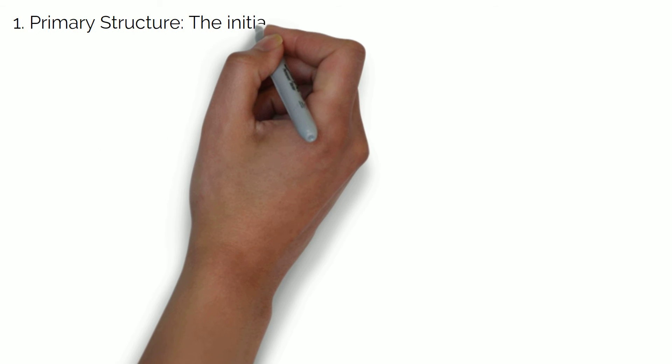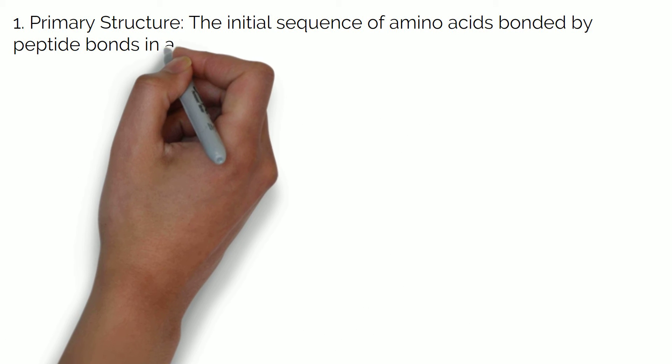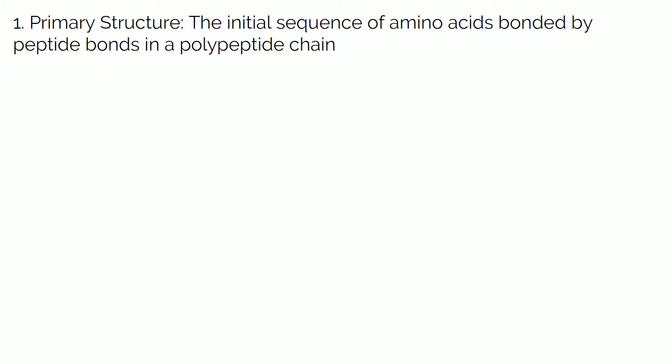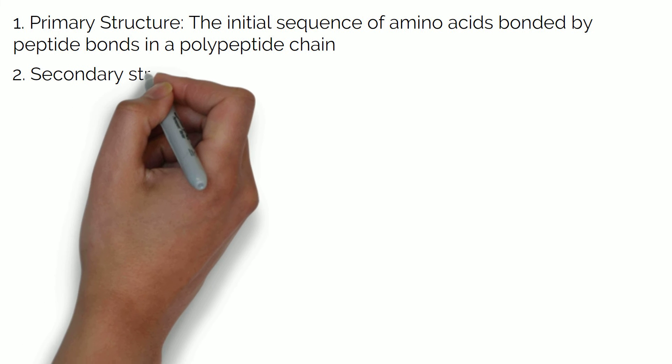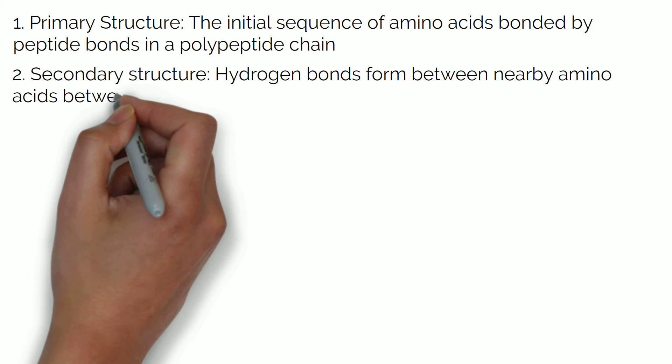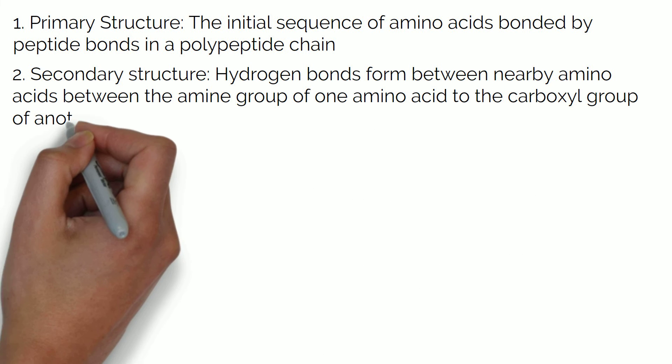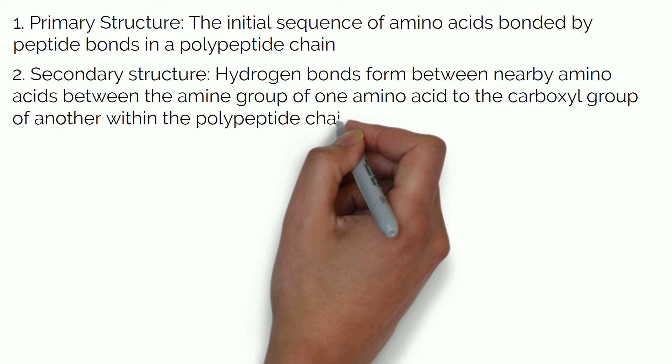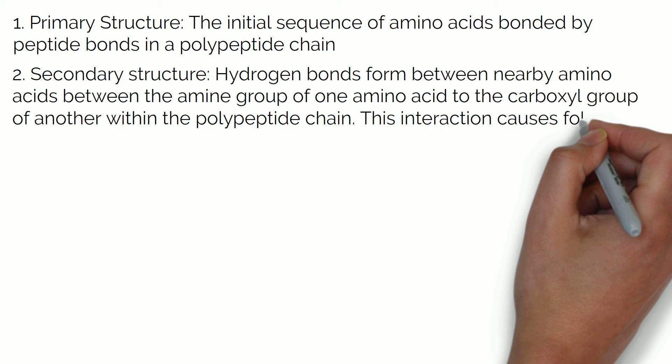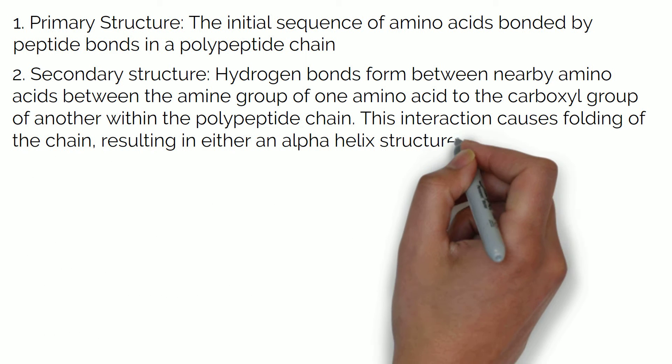First, the primary structure is the initial sequence of amino acids bonded by peptide bonds in a long polypeptide chain. The secondary structure is formed from hydrogen bonds between nearby amino acids, between the amine group of one amino acid to the carboxyl group of another within the polypeptide chain. This interaction causes folding of the chain resulting in either an alpha helix structure or a beta pleated sheet.